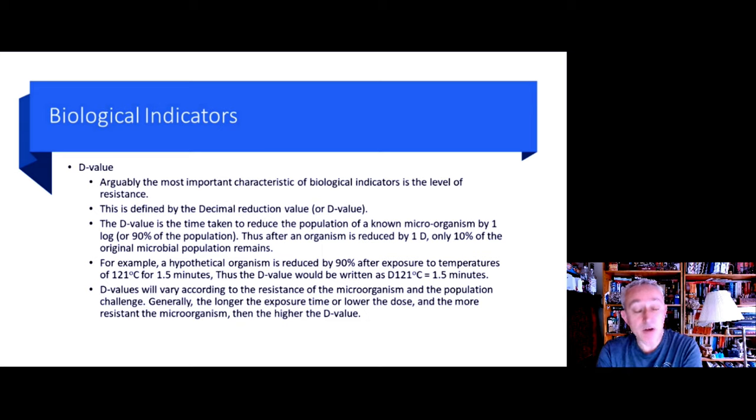So if we were to purchase biological indicators with a D value at 121 degrees Celsius stated at 1.5 minutes, then this becomes the standard for operating an autoclave device. This means that our spores on our spore strip will be reduced by 90% after exposing the biological indicators and our autoclave load for 1.5 minutes at 121 degrees Celsius. And it then follows, with each successive 1.5 minutes, the microorganisms decrease by a further 1 logarithm.